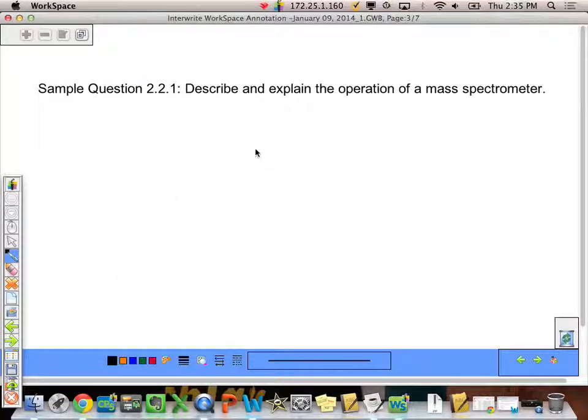The third question says, describe and explain the operation of a mass spectrometer. So we know that we have to go through the steps of, first we have to vaporize the substance. Once it's in the vapor form, then we can ionize it. So we're going to remove some of the electrons that are in it so that we can figure out what the actual mass is. Those electrons don't produce enough mass for it to matter for our mass of the substance. Then we're going to speed it up through the machine.